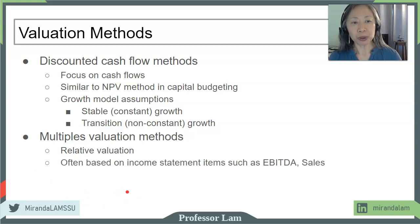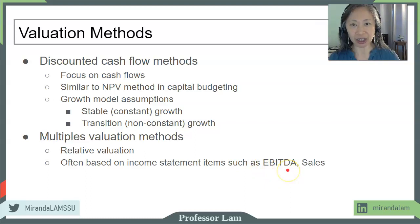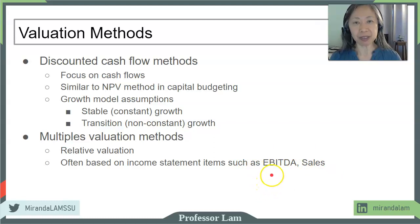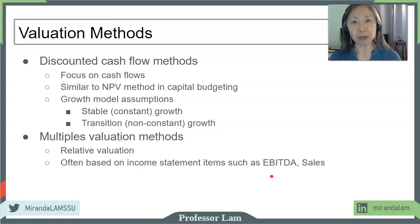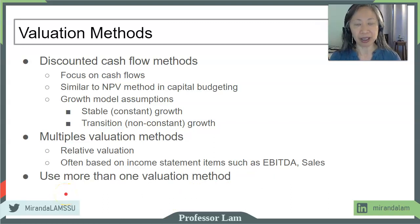In addition to the discounted cash flow valuation method, another type of method is the multiples method. In the multiples method, we are looking at the value of a company relative to its peers — it is considered a relative valuation technique. Typically, we focus on a particular item on the income statement, oftentimes EBITDA (earnings before interest, taxes, depreciation, and amortization) or sales. The reason we focus on EBITDA and not net income is because the choice of leverage, which affects interest expense, as well as tax strategy are unique to the current owner and will be different for the buyer. Finally, when doing valuation, we typically use more than one method to validate and cross-check our estimations.